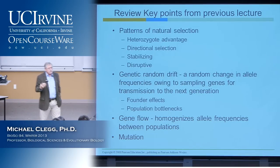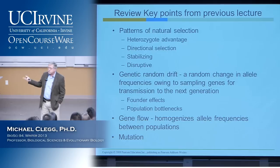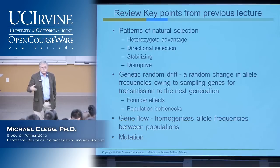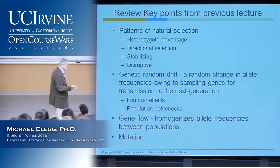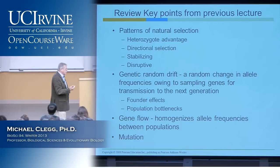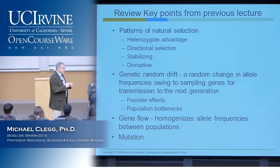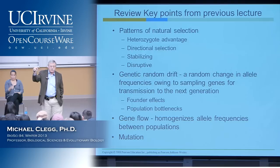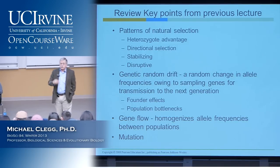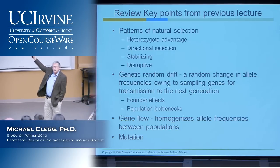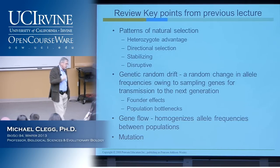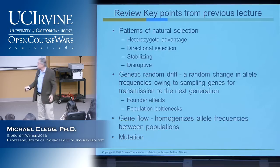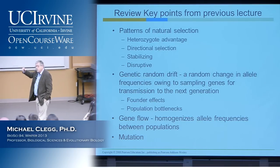We then went on to talk about other forces of evolution. Natural selection is clearly the most important — the force that leads to adaptation to environments. But there are other causes of gene frequency change in populations. We introduced allele frequency change as the fundamental definition of evolution: simply changes in the frequency of heritable material over time, regardless of whether it's adaptive. Aside from natural selection, there is genetic random drift — just the random sampling of genes to transmit to the next generation.